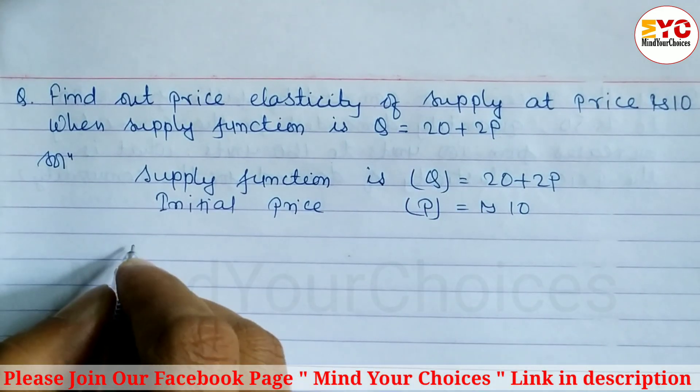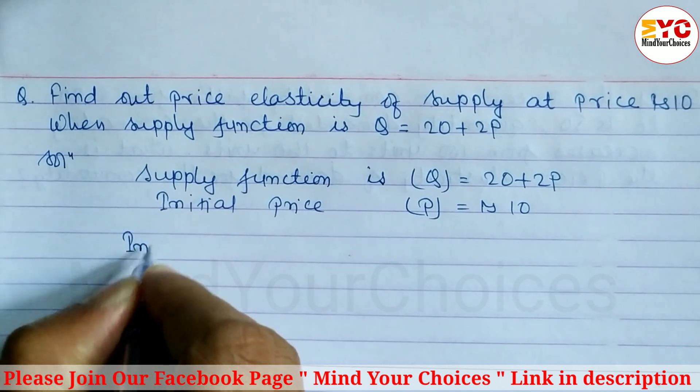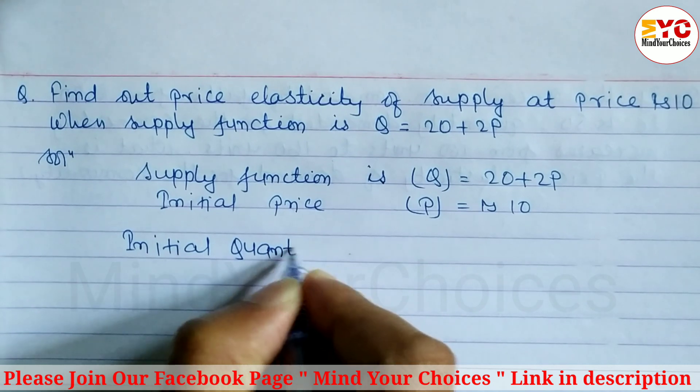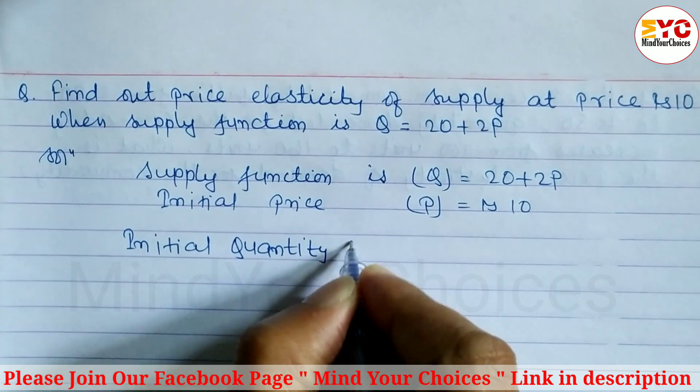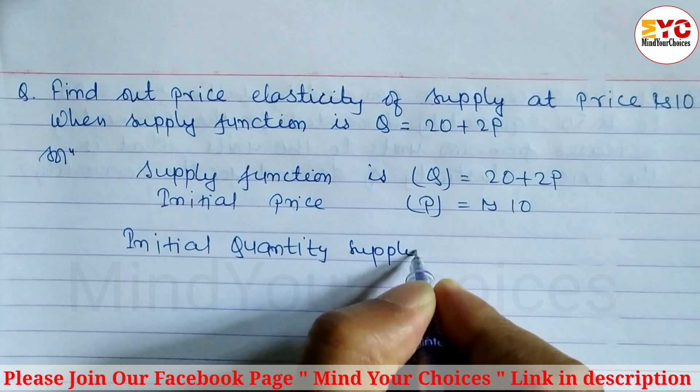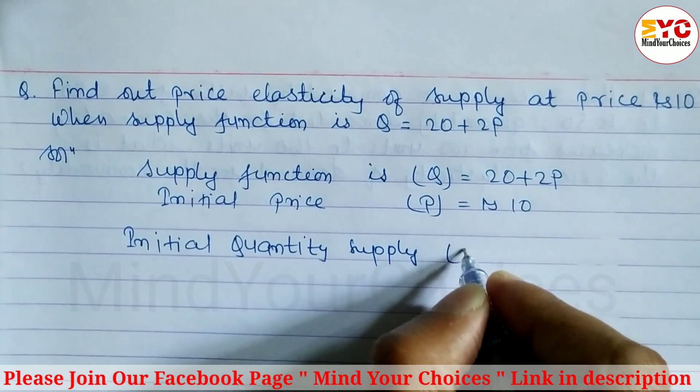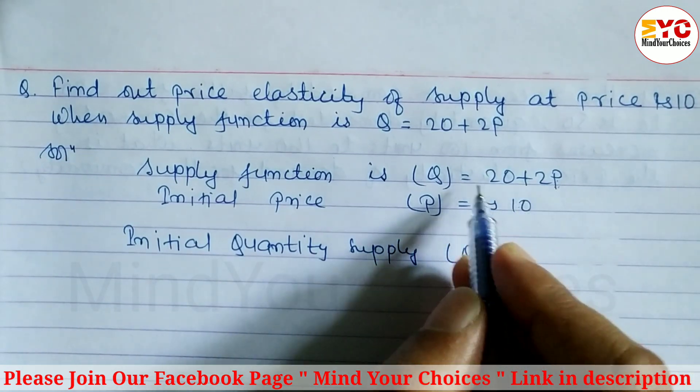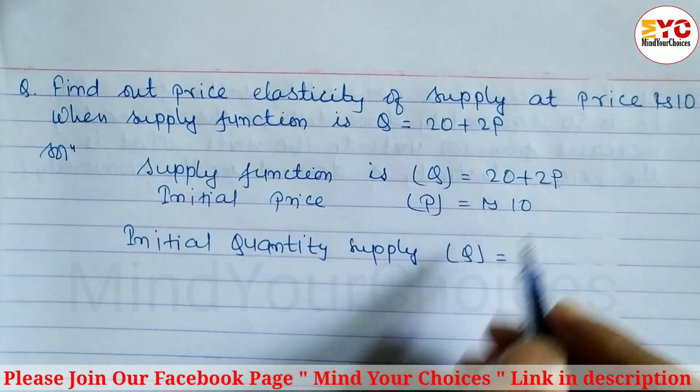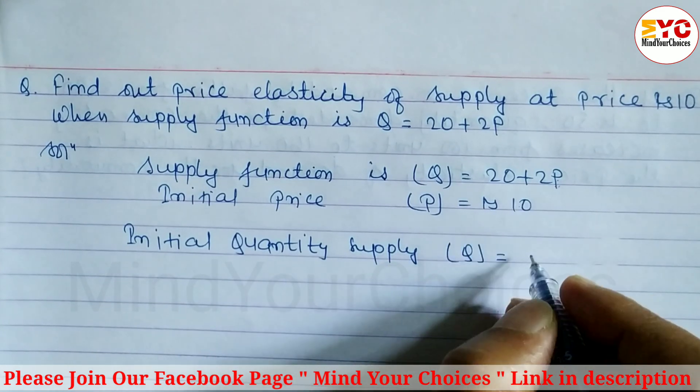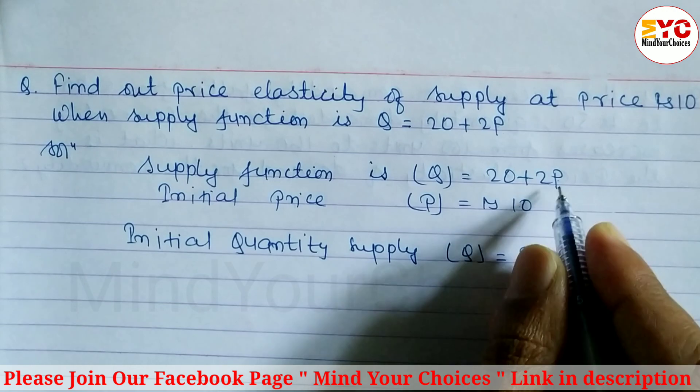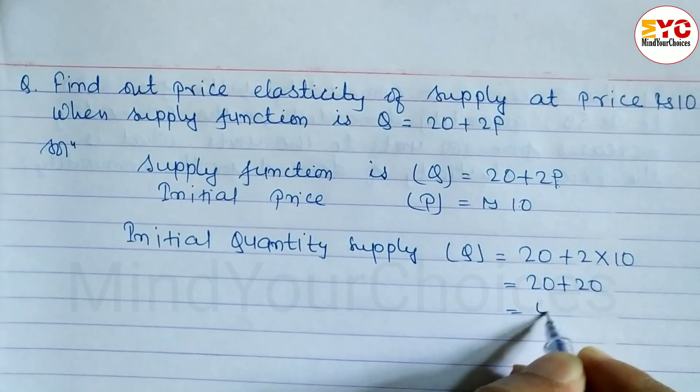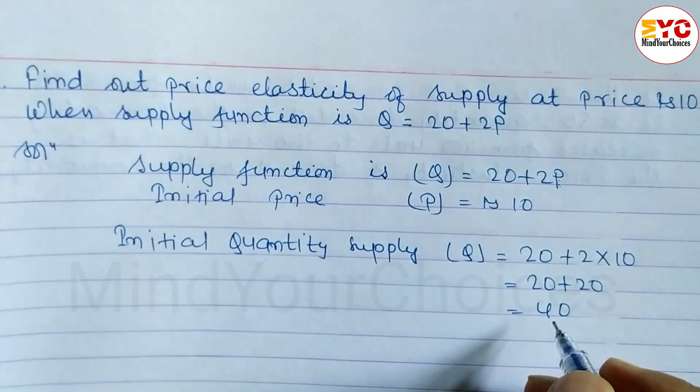After that we have to find out initial quantity supply. So we can write here initial supply or initial quantity supply. So Q is equal to what is the value? Now in the place of P we have to write down 10. Supply function is given, to find out initial quantity supply we have to put the value of P here. So 20 plus 2 into 10. So 20 plus 20, which is equal to 40.